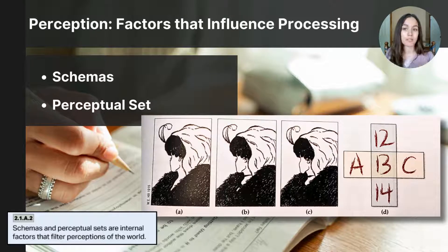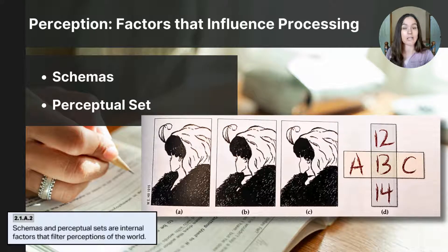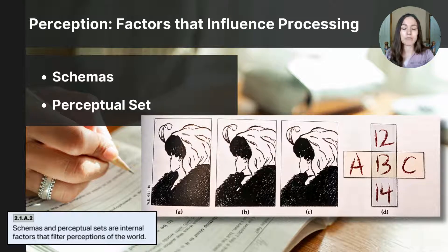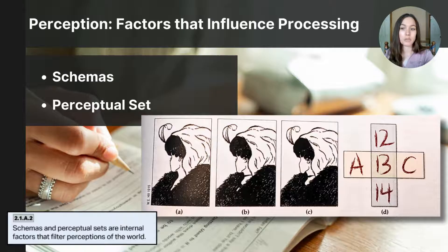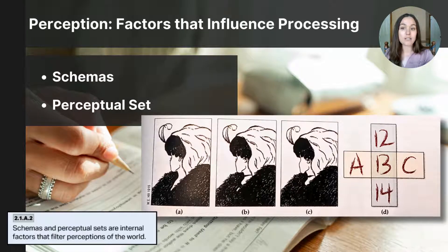Perceptual set refers to a predisposition to perceive things in a certain way. It acts as a mental filter in the moment, making us more likely to notice aspects of our environment and interpret them in a specific way. On the screen are two examples: show a friend either image A or C, then show them image B. Having seen A or C first will influence how they perceive image B — whether they see it as a young woman or an older woman. This is a perceptual set.